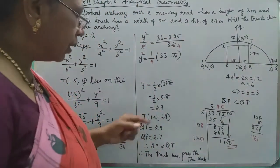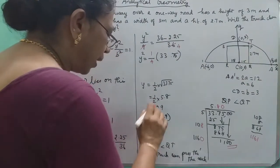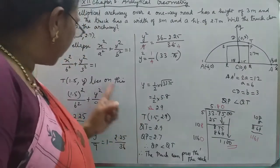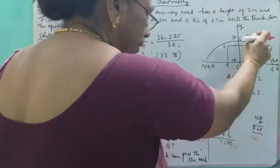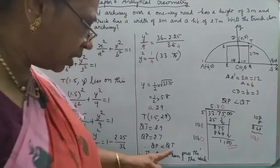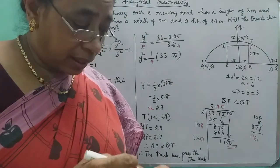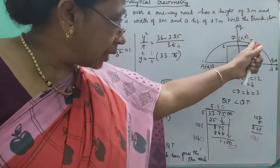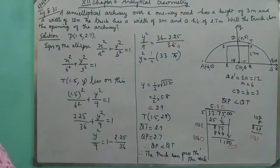The value of y is approximately 2.9. So point T is at (1.5, 2.9). Since QT is 2.9 meters and the truck height PT is 2.7 meters, the truck will clear the archway. That's all. Bye.